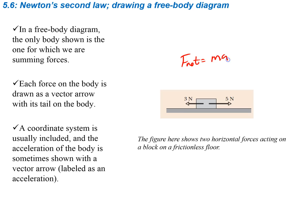If we net all of our forces together — adding them all — we have 5 newtons minus 3 newtons, because 3 newtons is in the negative x-direction. That equals mass times acceleration, so we get 2 newtons equals Ma for the equation.